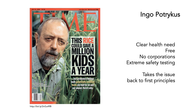The person who has really been pushing this is Ingo Potrykus. It's a very interesting example of a genetically modified organism because there's a very clear health need. The golden rice has been made available for free, meaning there are no corporations involved. A lot of the criticisms of genetically modified organisms are around commercial issues, and there's also been an extreme amount of safety testing. This particular example takes the issue of GMOs back to first principles.